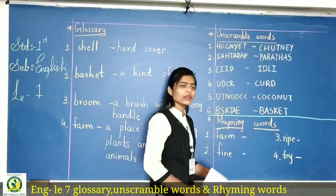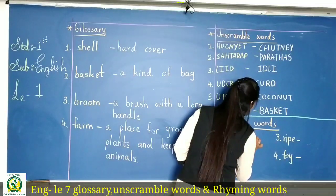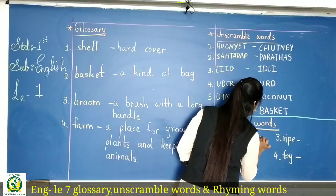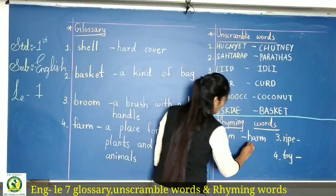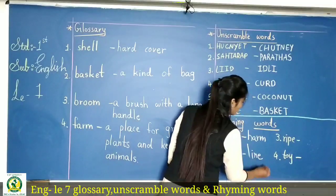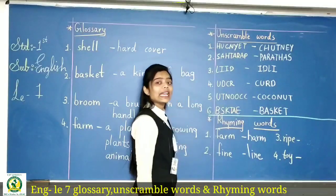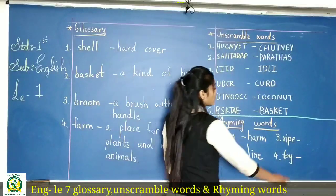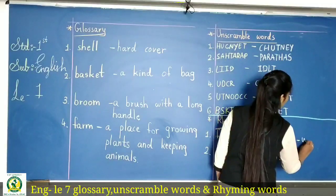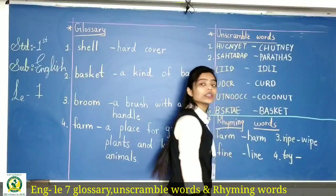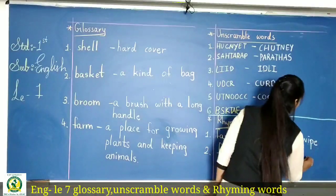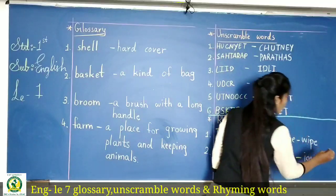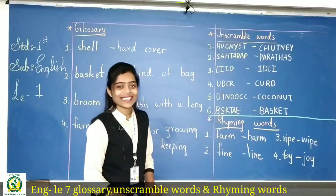Now we have rhyming words. Farm — iska rhyming word hoga 'harm', H-A-R-M. Fine — to 'line', L-I-N-E. Ripe — to 'wipe', W-I-P-E. Toy — to 'joy', J-O-Y. Rhyming words theek hai?